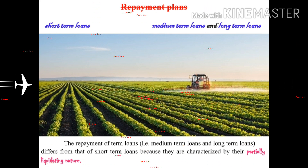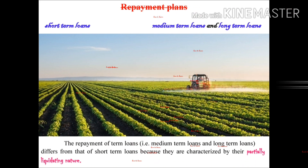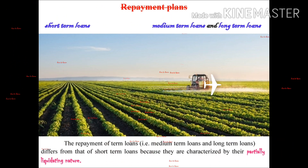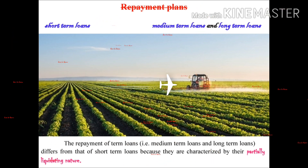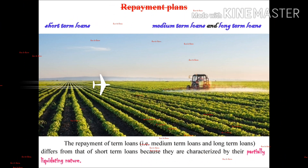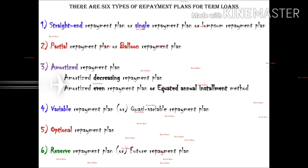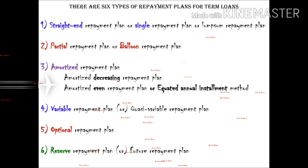If you come here, you will be able to get a loan in the bank. This is the repayment plan. There are three types of loans: a short-term loan, a medium-term loan, and a long-term loan. A short-term loan has a repayment of 1 year or 18 months. Medium-term and long-term loans are different from short-term loans because they are characterized by their partial liquidity in nature.